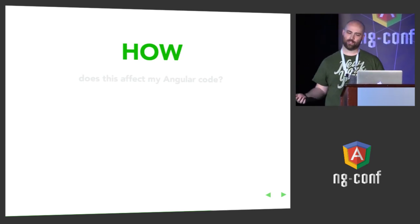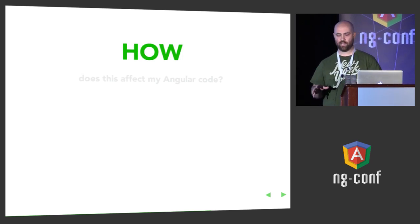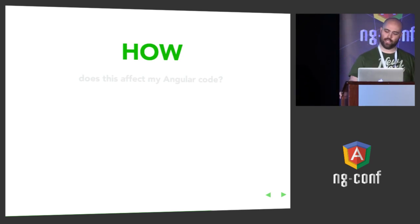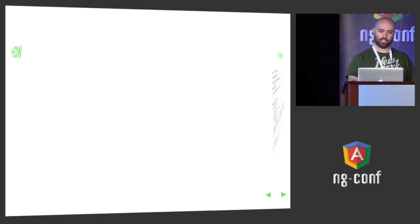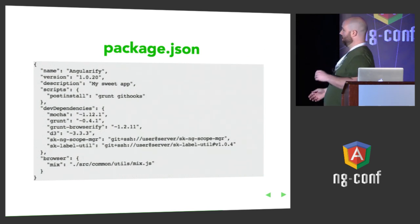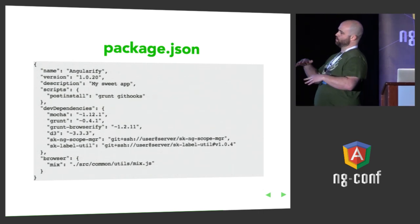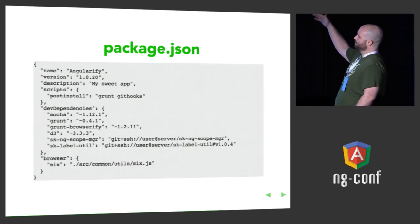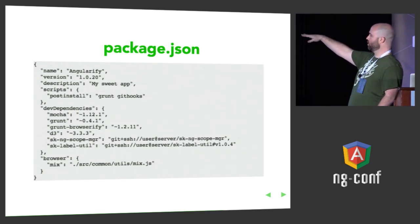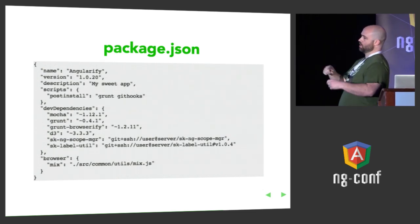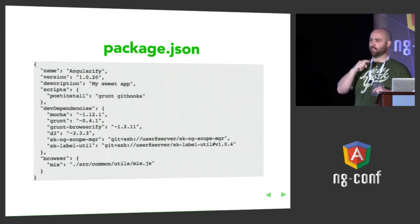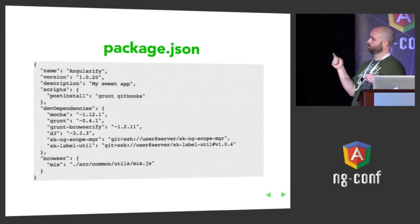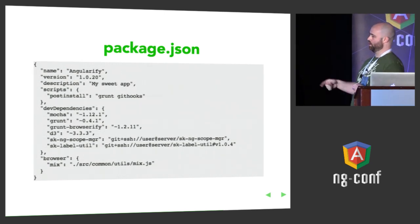So this is an Angular conference — how does this relate to Angular? I feel like Browserify is a very beneficial way to write client-side code regardless of what framework you're using. package.json is how you document and manage your dependencies for a Node or Browserify project. You've got your app name, your version number, some scripts. This one is really nice — whenever a developer checks out the code and runs npm install, after it downloads everything, it will run a Grunt task that installs a git pre-commit hook that will run all of our linting and unit tests before they're allowed to commit. It'll actually prevent commits.